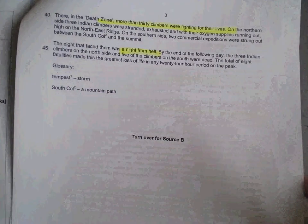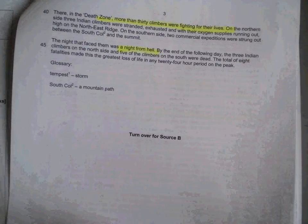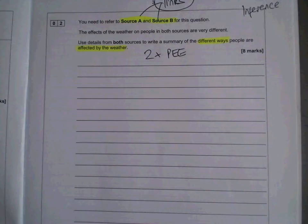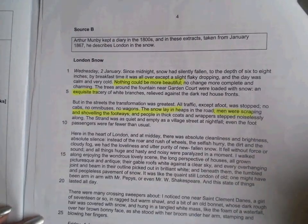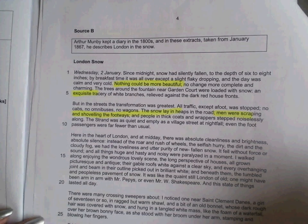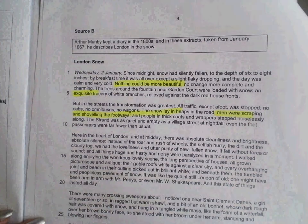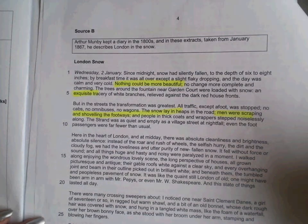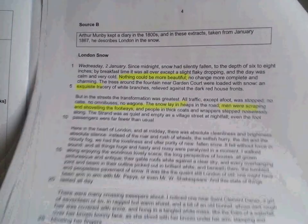There are images of 'a night from hell' and people fighting for their lives. In the second source it's very different — it's about how attractive the snow is, how beautiful it is, how fun it is. So that's where I'm going to start with one of my key differences: in Source A it's very dangerous and frightening, and in Source B it's much more attractive.